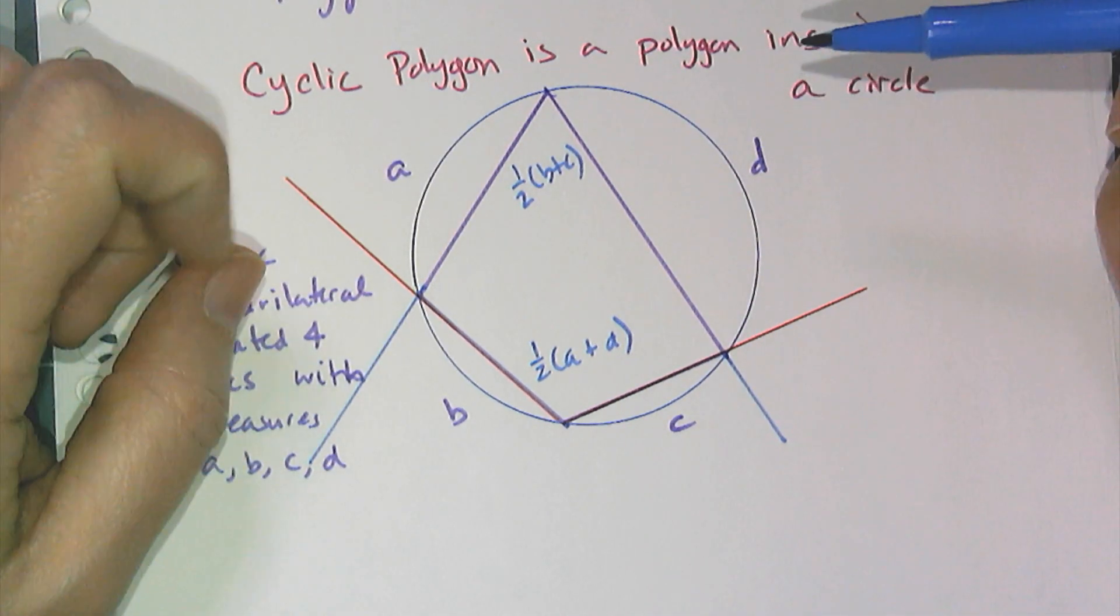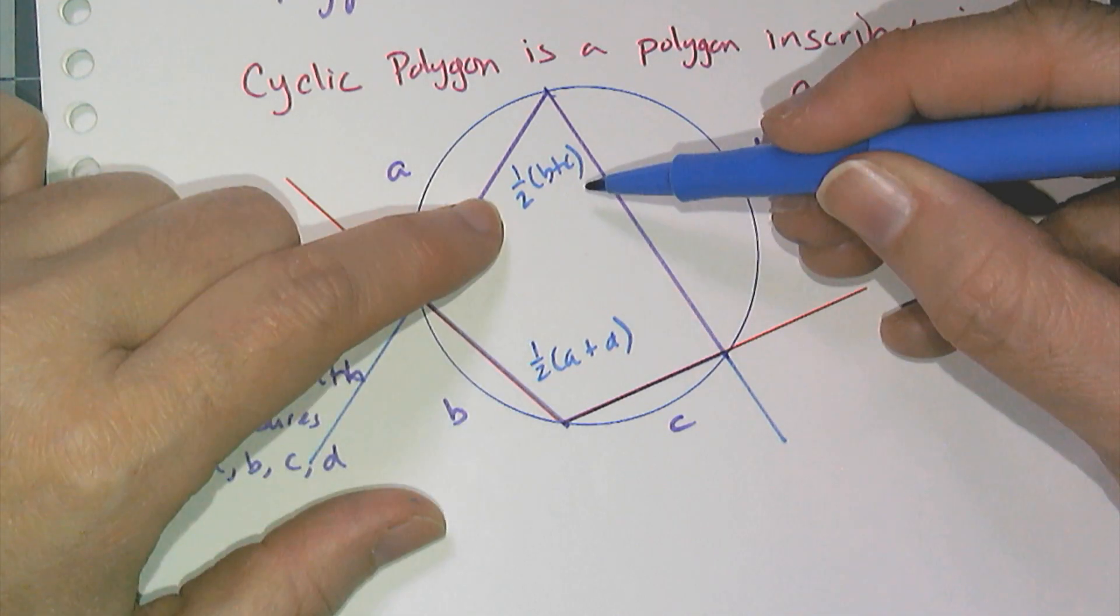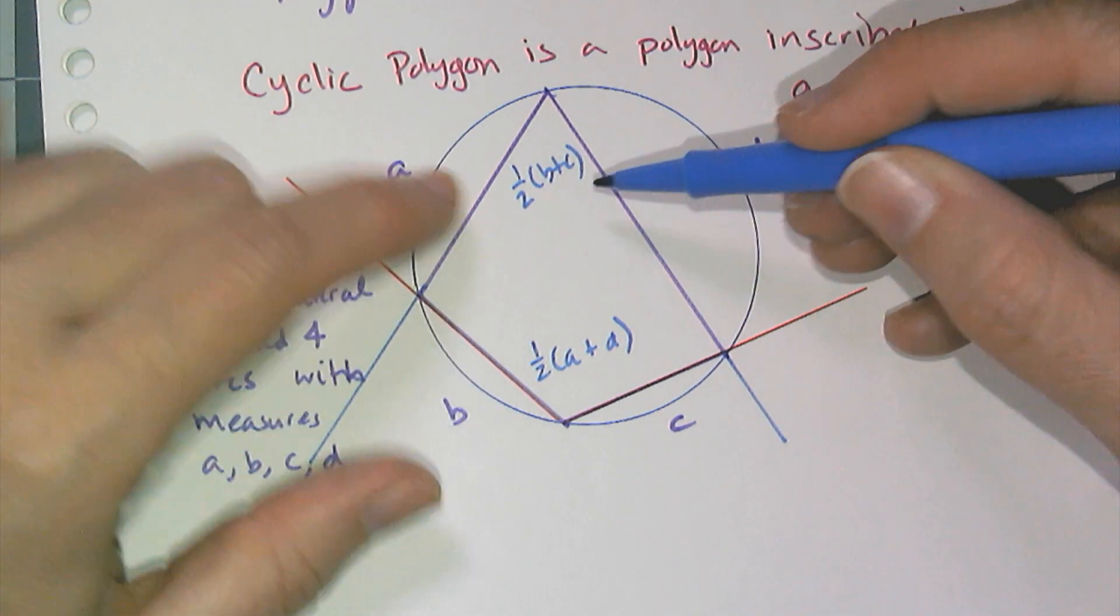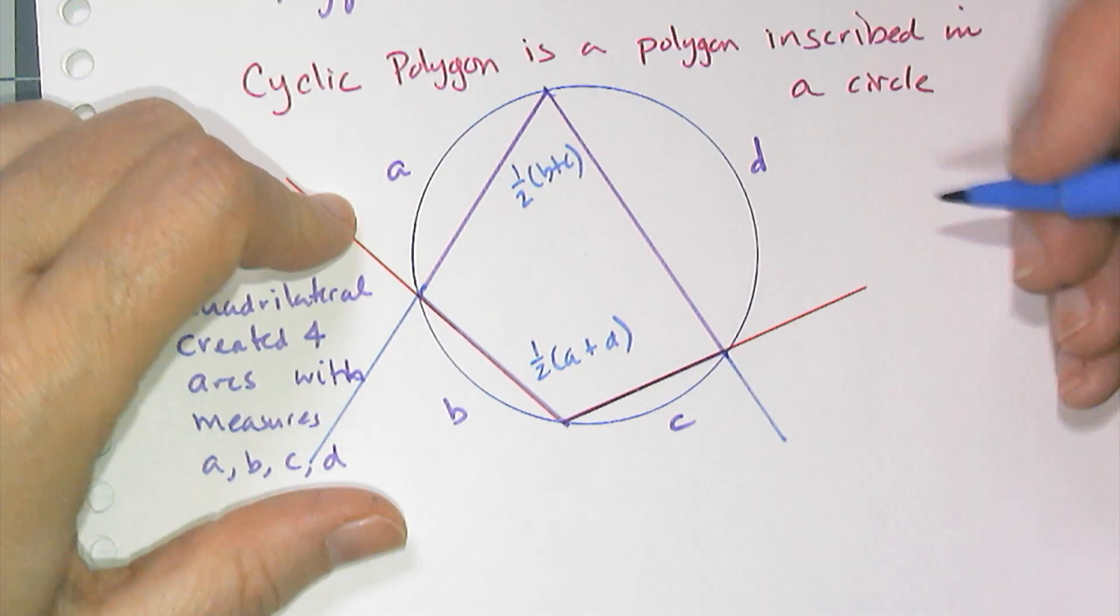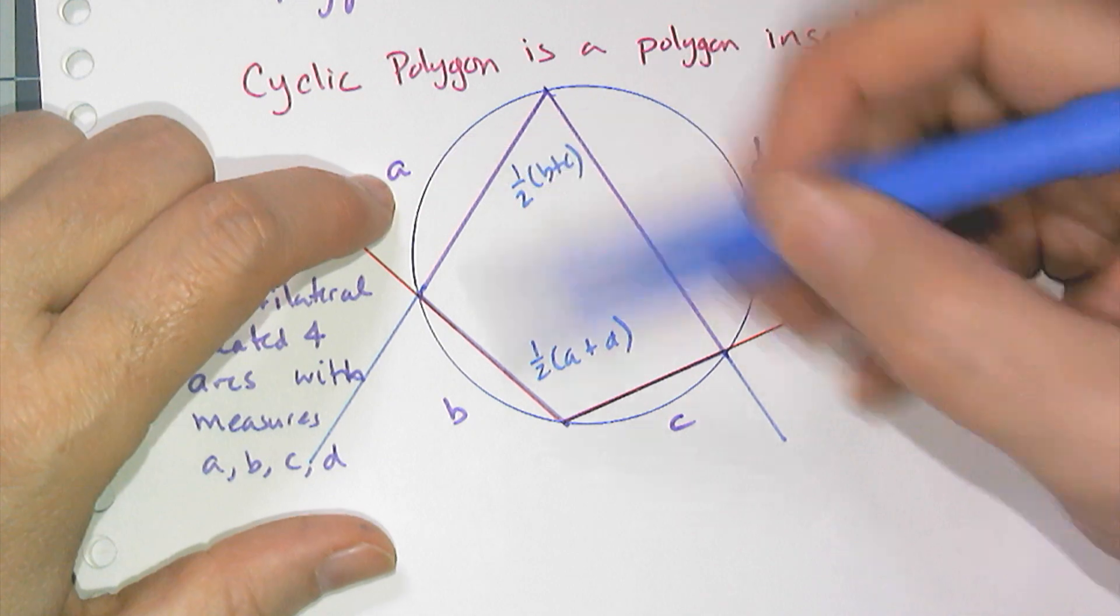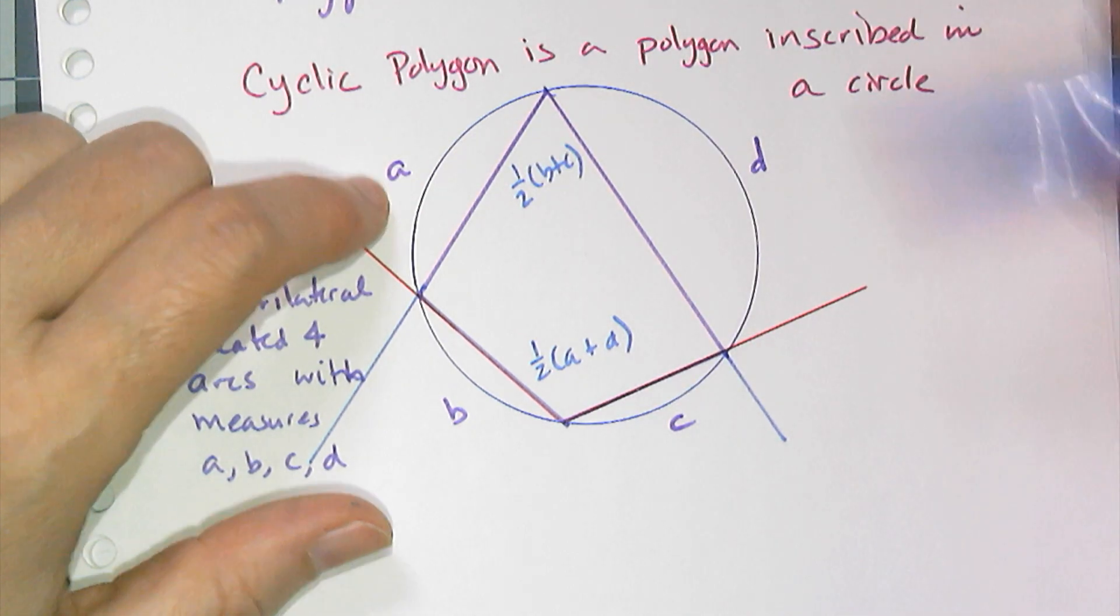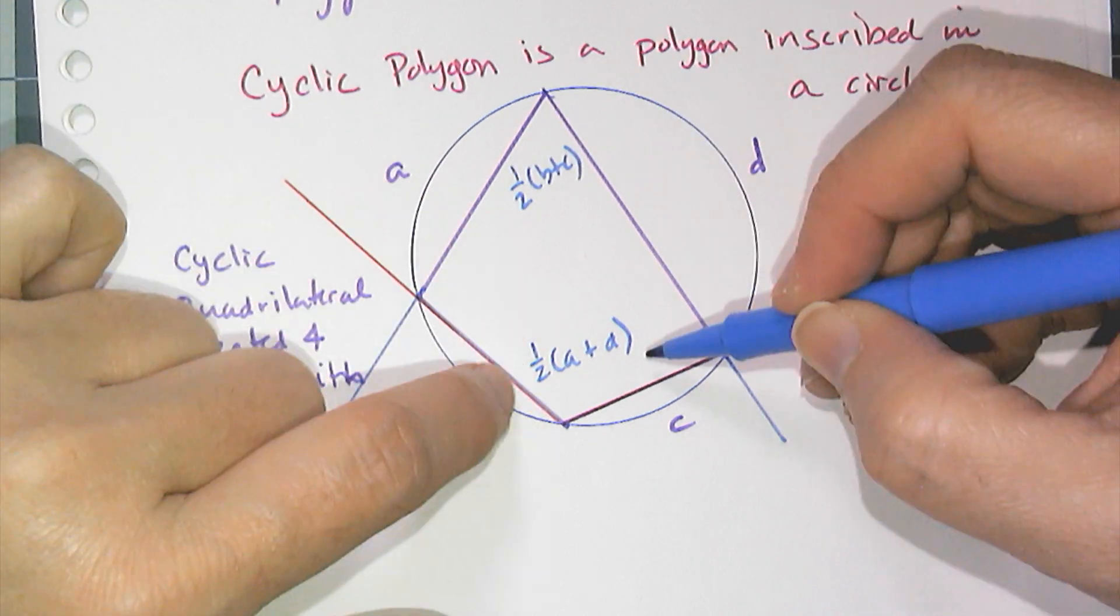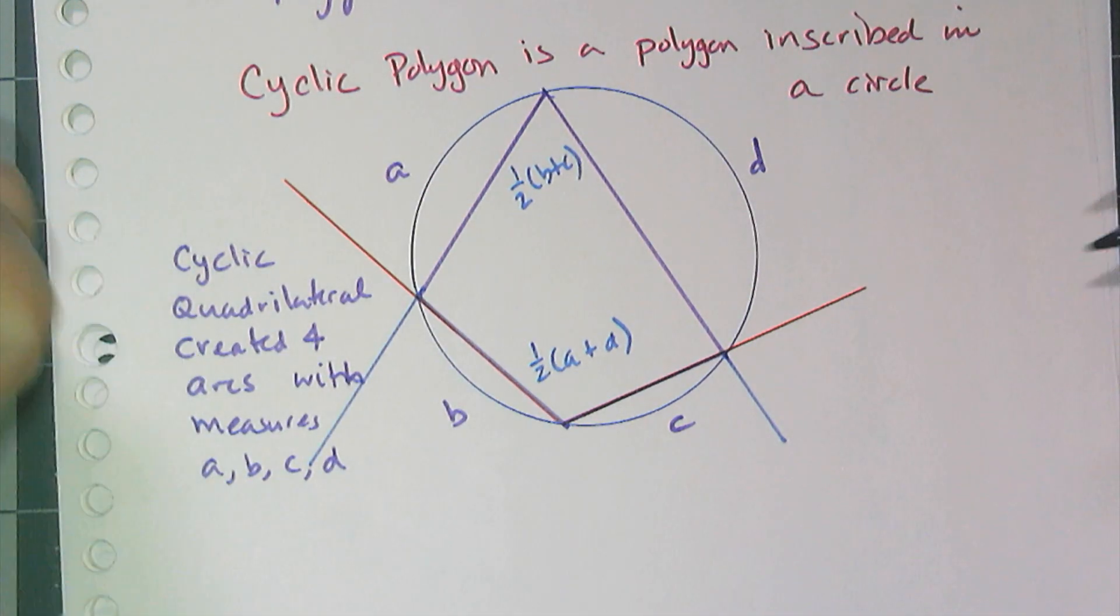And I also know that if I added those two angles together, it would be half of the full circle. And the full circle's measure, a plus b plus c plus d, is going to be 360 degrees. So this plus that has to equal 180 degrees.